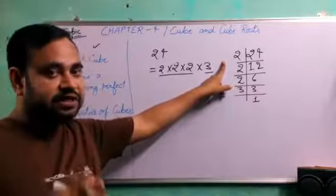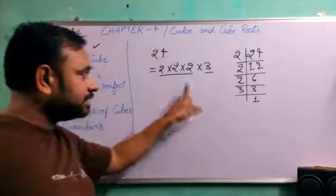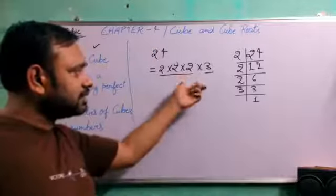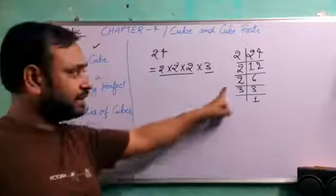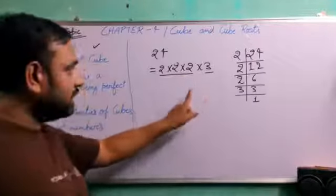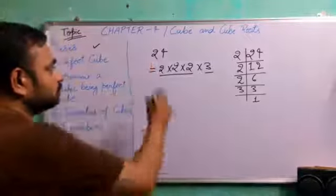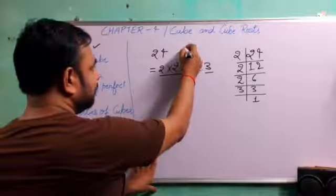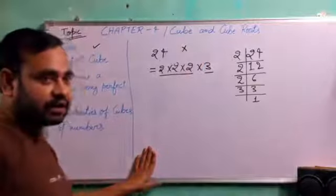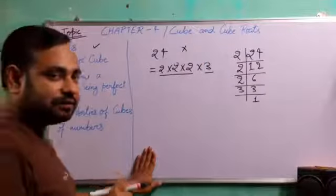It should be 6 times, it should be 9 times because we will have to gather the number 3 times for having this number a perfect cube. If we are not getting the number or all the numbers 3 times in prime factorization, so it means that the given number is not a perfect cube. So this number 24 is not a perfect cube.